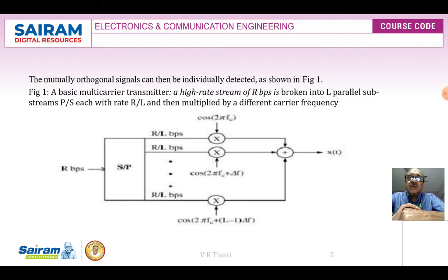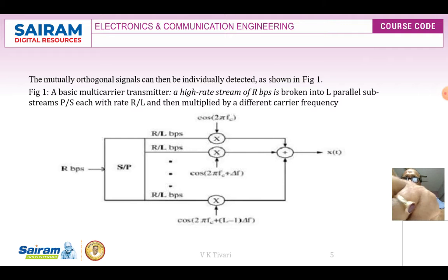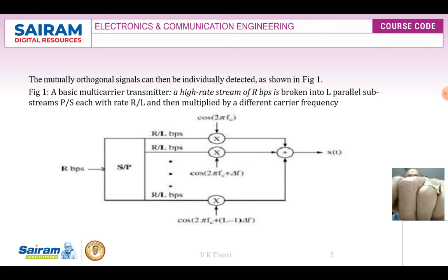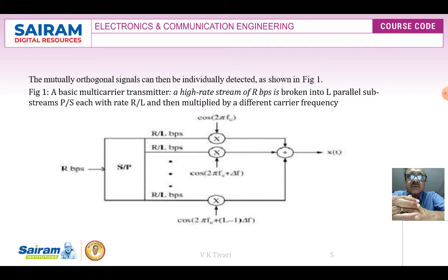Figure 1 shows the basic multicarrier transmitter where a bit stream of R BPS is broken into L parallel sub-streams, each multiplied by a different carrier frequency. The input R BPS data undergoes serial-to-parallel conversion, divided into L sub-streams each at R/L BPS. Each sub-stream is modulated using orthogonal phase shift keying with orthogonal frequencies. At last, at the transmitter, all sub-streams are combined orthogonally to produce the total transmitted signal x(t).